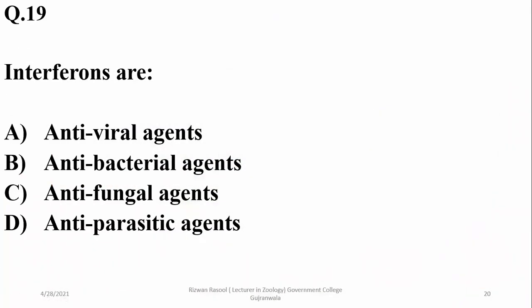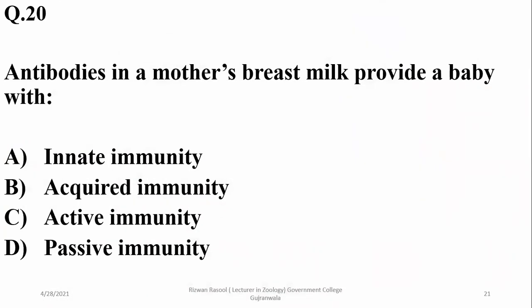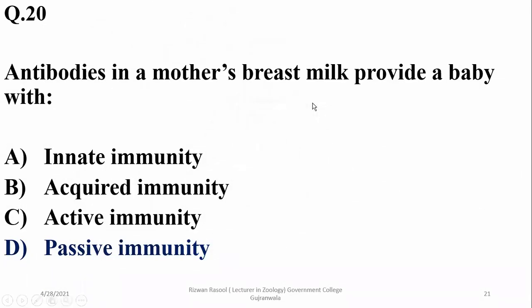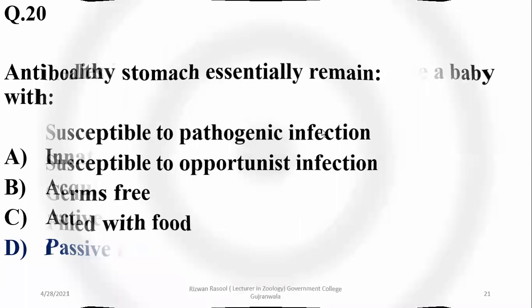Interferons are antiviral proteins produced by white blood cells and lymphocytes. Antibodies in a mother's breast milk provide a baby with natural passive immunity. Any antibodies present in mother's milk or crossing the placenta are providing passive immunity.